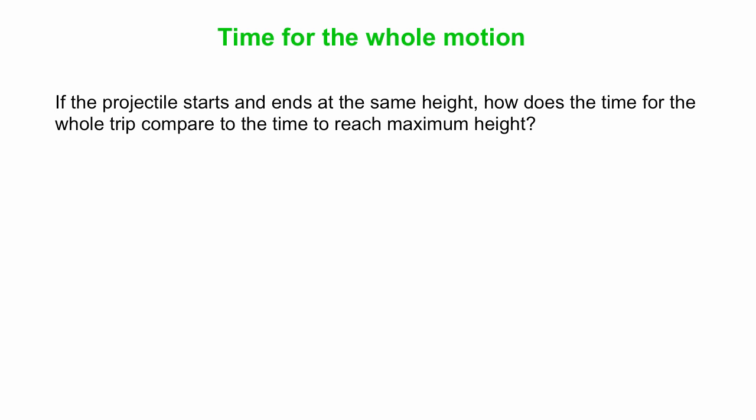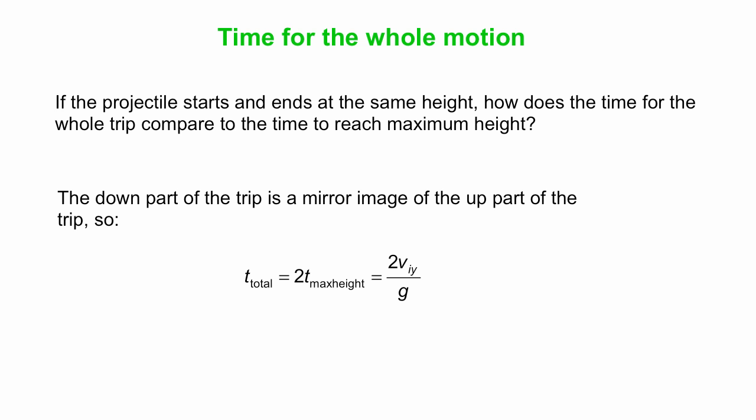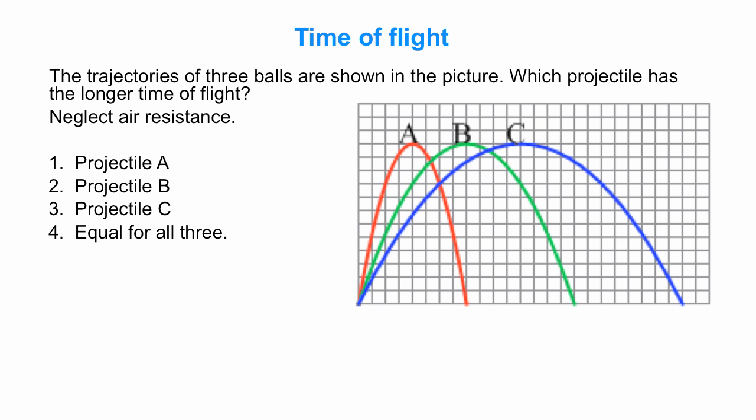What about the whole motion? How long does that take? Well, if the projectile starts and ends at the same height, then the going up part of the trip takes exactly the same time as the going down part of the trip. There are mirror images of one another. So in the special case of the projectile starting and ending at the same height, we can say the total time is twice the time to reach maximum height. So that is 2 Viy over G.